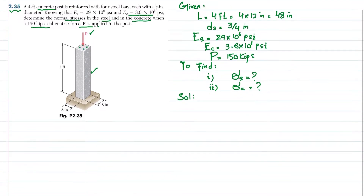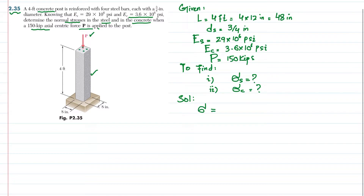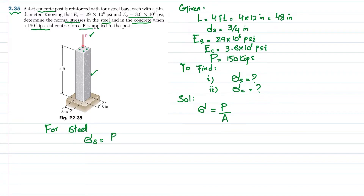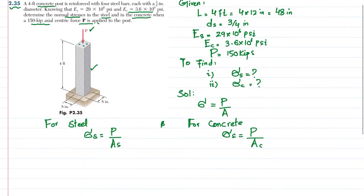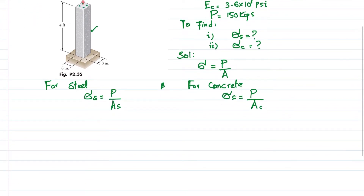Starting the solution: stress is equal to load per unit area. For steel, σ_s = P_s / A_s, and for concrete, σ_c = P_c / A_c, where A_s and A_c are the areas of steel and concrete, and P_s and P_c are the loads taken by the steel and concrete respectively.